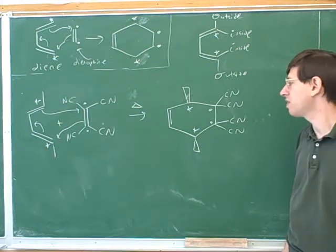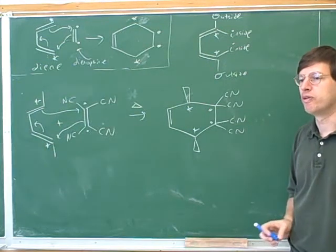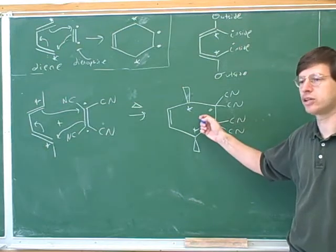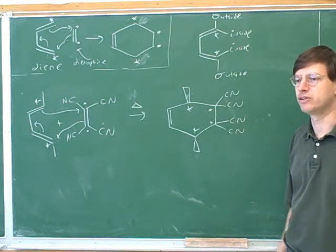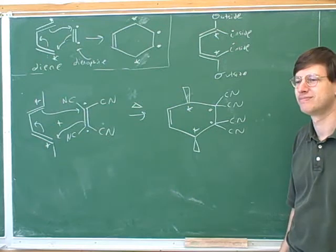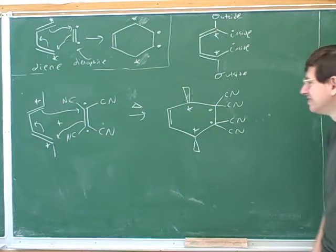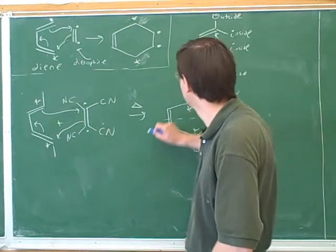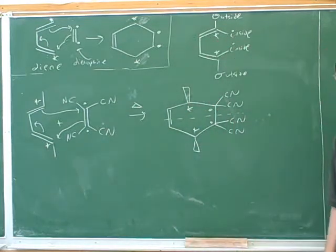Now we have to ask ourselves whether we need to draw an enantiomer of this. Well, remember our new approach. The easiest way to check that is just to ask whether this molecule is meso. Is this molecule meso? Yes. Yes, because here's the plane of symmetry. The top half is symmetrical to the bottom half. This is symmetrical. So what did we decide? Is this meso? Yes.